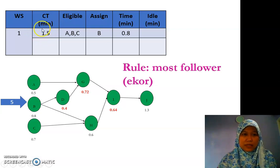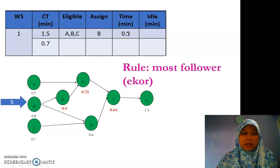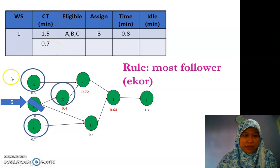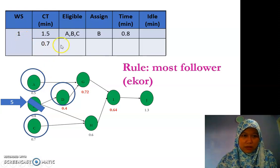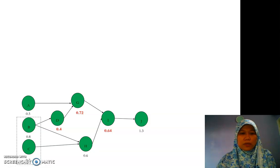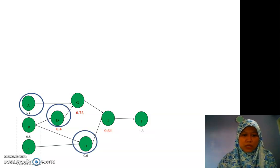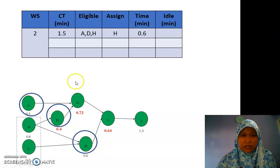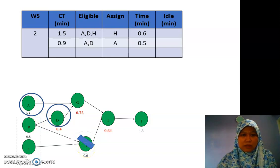Every new workstation we start with the cycle time of 1.5. We have A, B, and C eligible but due to the rules we assign B first: B is 0.8, so the remaining balance is 0.7. Next, what choices do you have? Either A, C, or D. Since we have 0.7 remaining, we choose C at 0.7, so we close station 1 without any idle time. We open the new workstation; our choices are A, D, and H, so we choose H at 0.6.